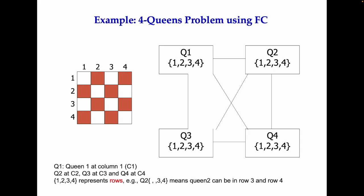Here we have queen 1 at column 1, queen 2 at column 2, queen 3 at column 3, and queen 4 at column 4. These columns represent fixed positions and the rows are the options. For example, if you see in a slide Q2 with entries 3 and 4, it means queen 2 cannot be in row 1 or row 2 — those are removed — so queen 2 can only be in row 3 or row 4.